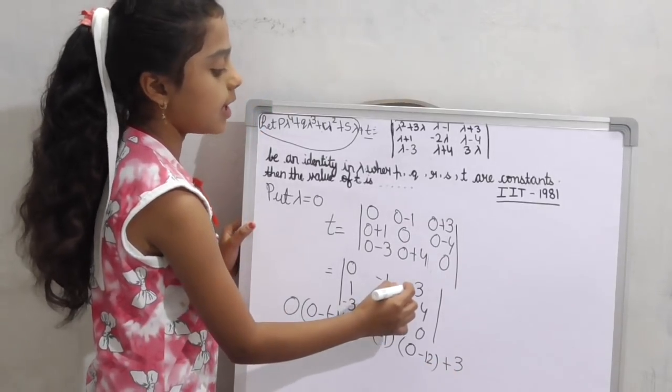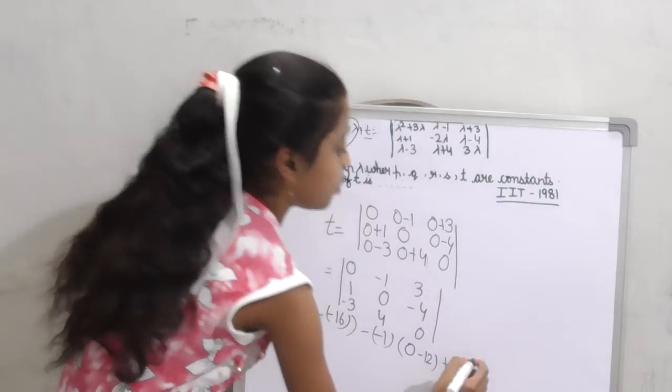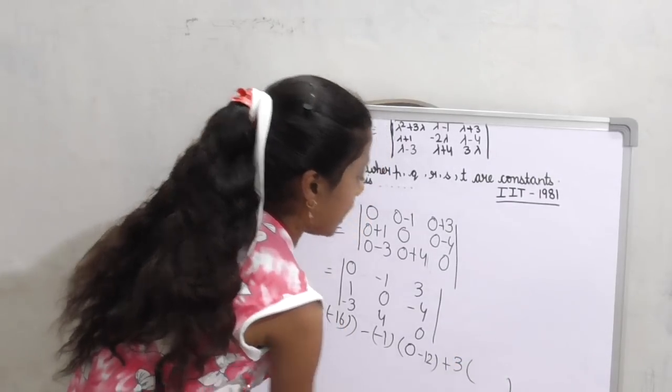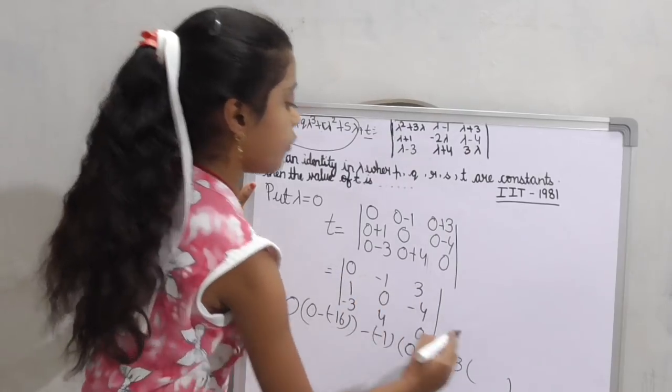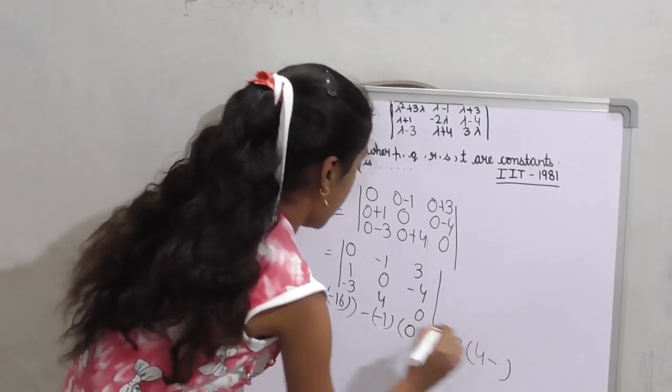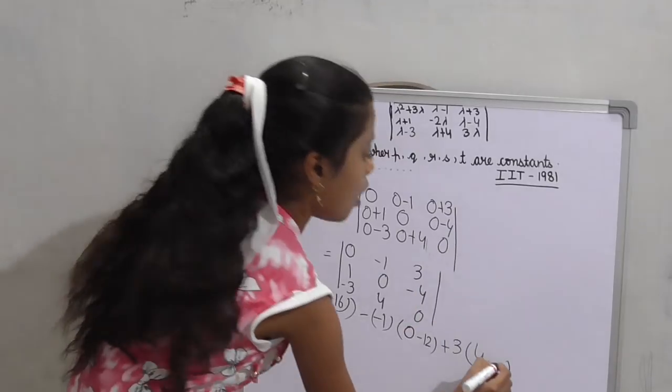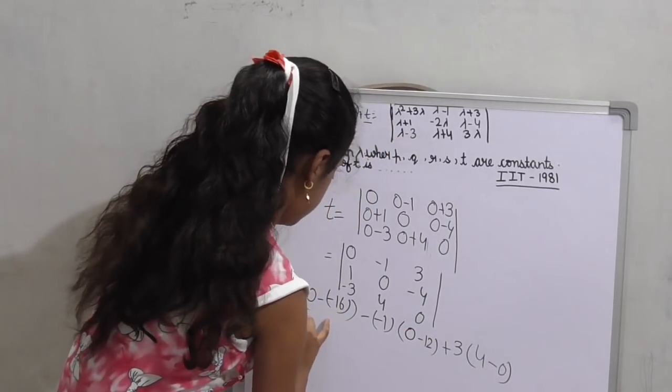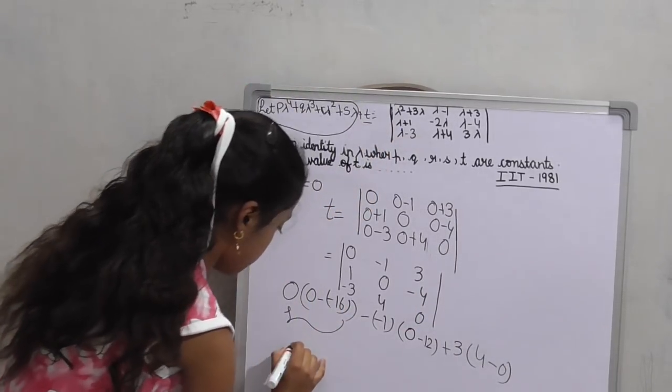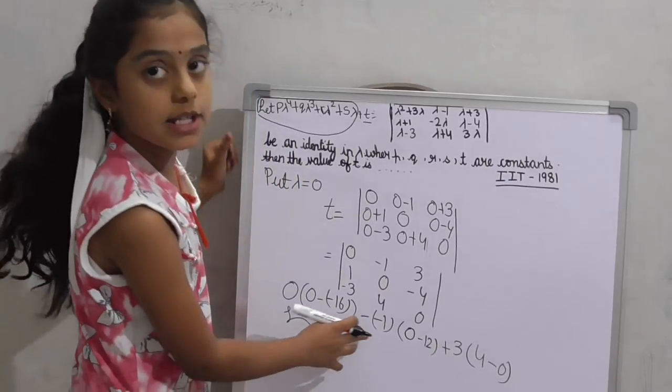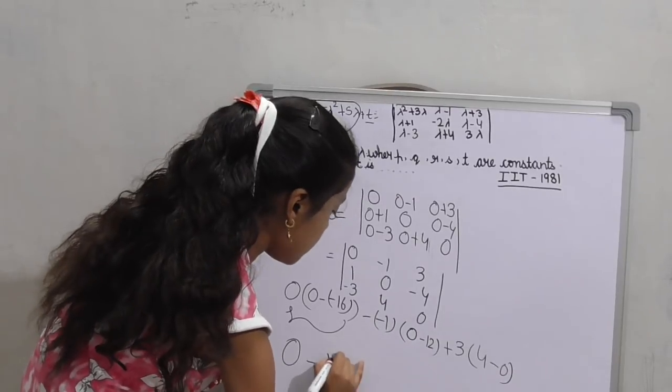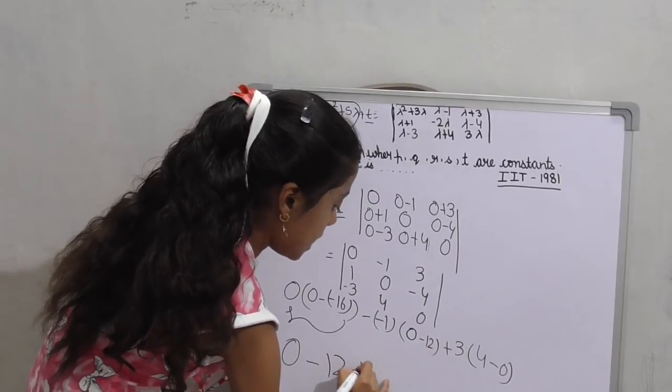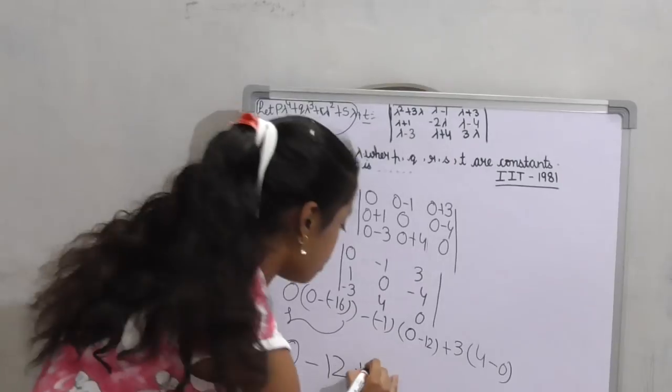Now take the third element, which is 3. Put a bracket. Leave row 3 and column 3. 1 into 4, 4, minus 3 into 0, 0. 0 into something equals 0, minus into minus is plus. Plus into minus, minus 12, plus 3 into 4, 12.